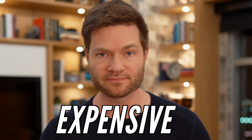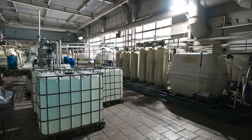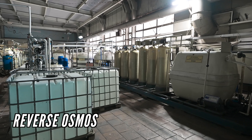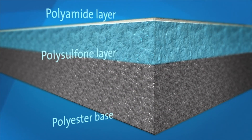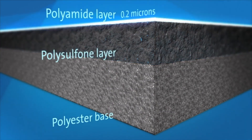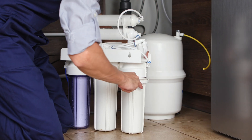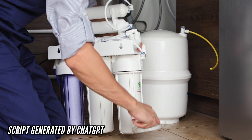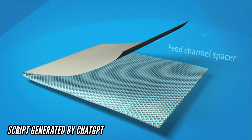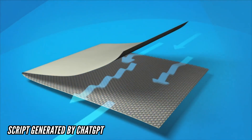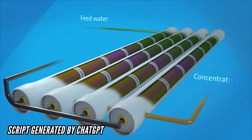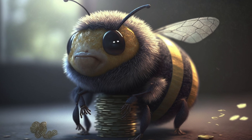The method that all the major desalination plants use is called reverse osmosis — the process of forcing water through a membrane with very small pores. These pores are just small enough for the water molecule to slip through, but too tight for the salt molecule to get through. While this method is effective at removing a wide range of contaminants, it's also imperfect, complicated, maintenance-heavy, and very energy intensive — and also pretty costly.